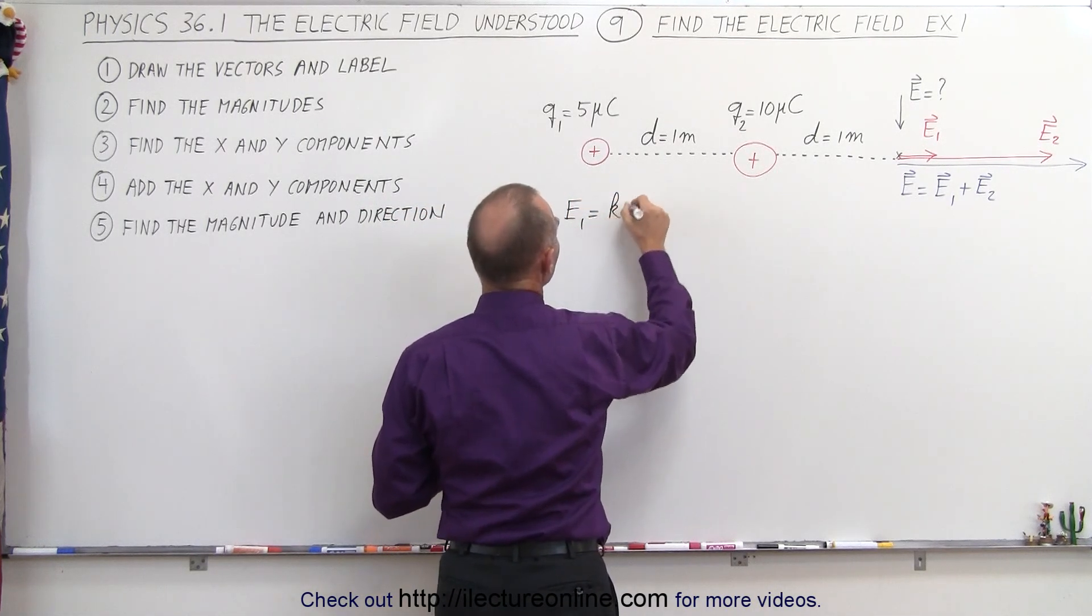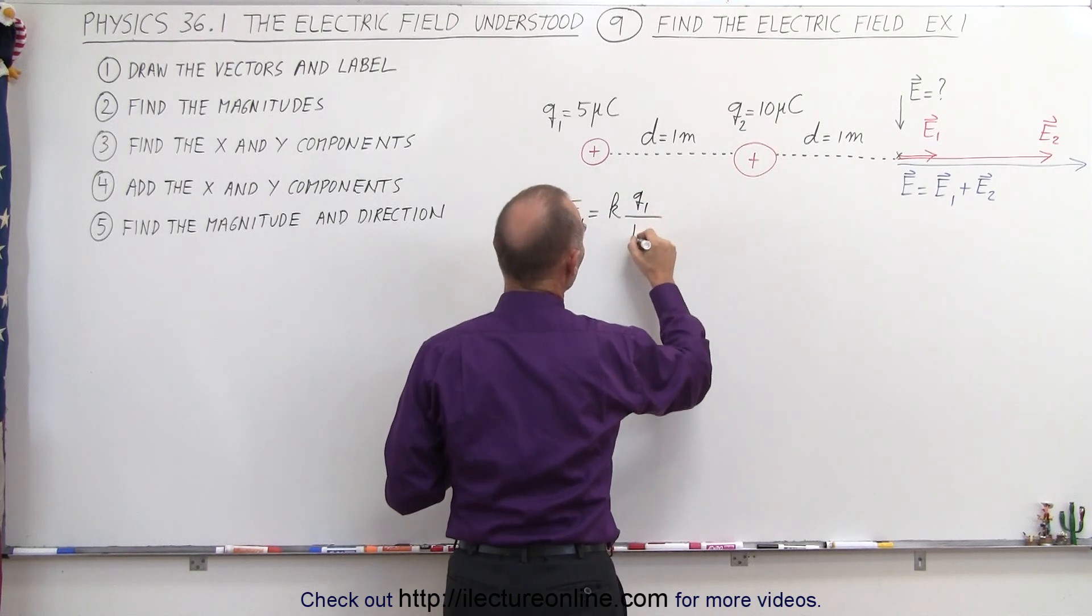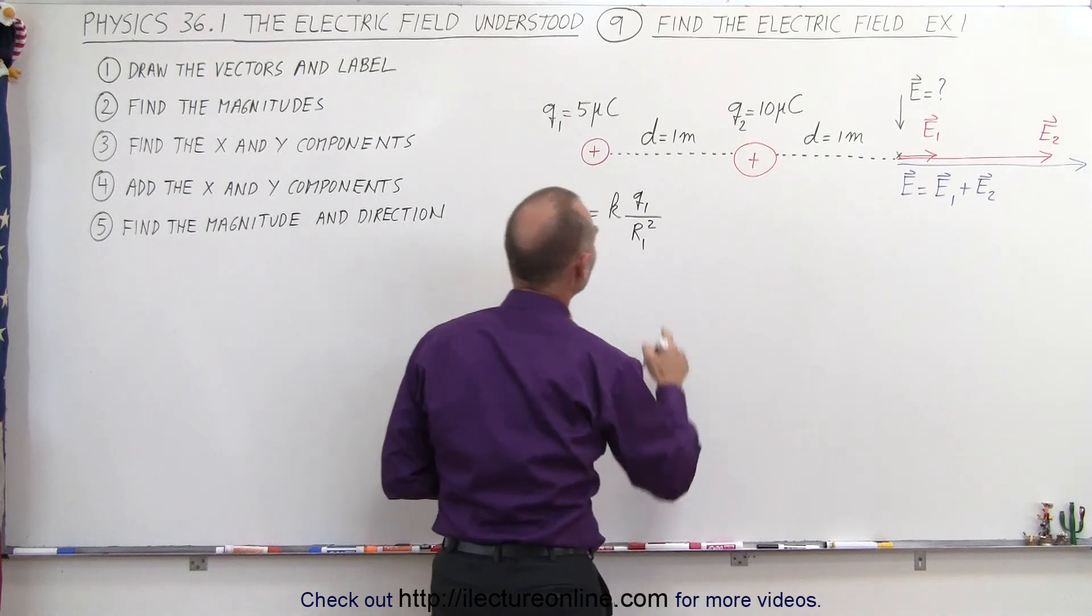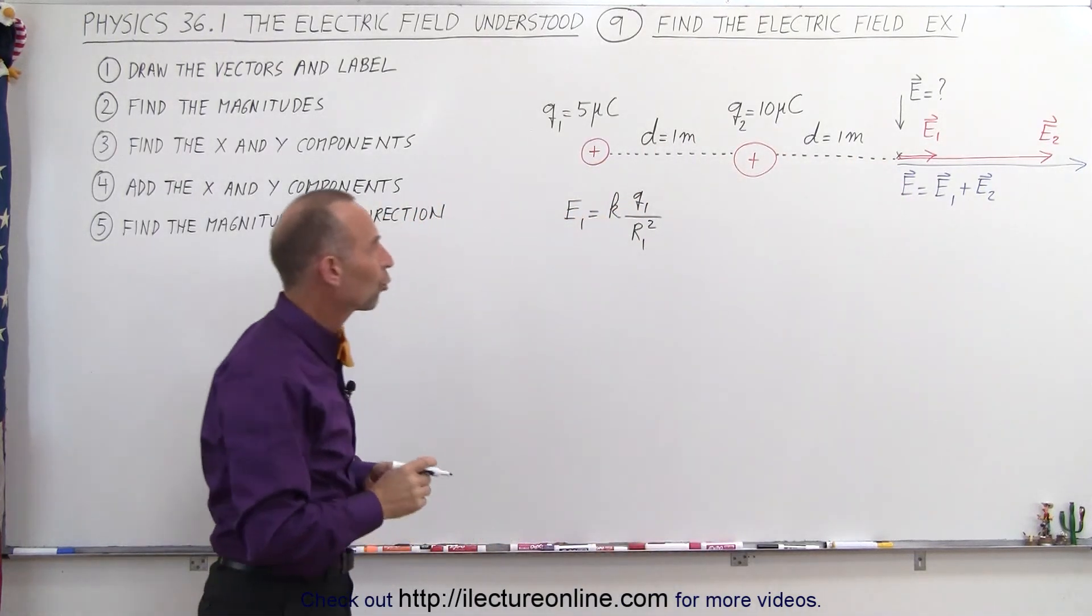E one is going to be equal to k times q1, divided by the distance between q1 and the place where you want to find the electric field squared.